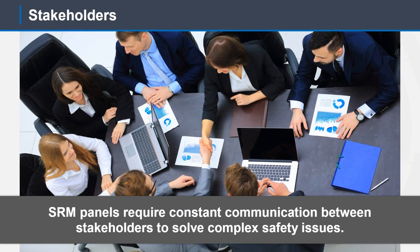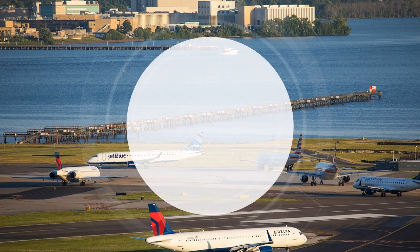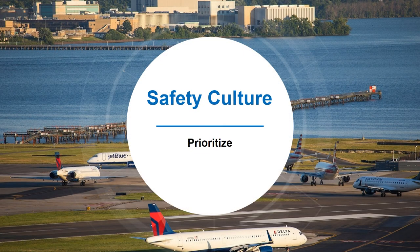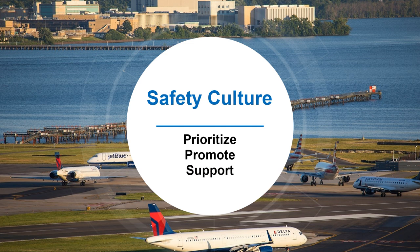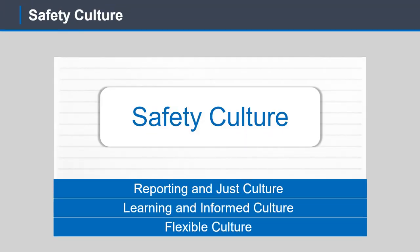Managers and executives may need to reach out to internal or external stakeholders at any time and must feel comfortable doing so. Stakeholders can be FAA employees, FAA bargaining unit representatives, Federal contract tower employees, DOD representatives, and operators and service providers. Without including all affected stakeholders, critical safety issues might be overlooked, some risk management strategies might not be considered, and inappropriate risk levels might be assigned.